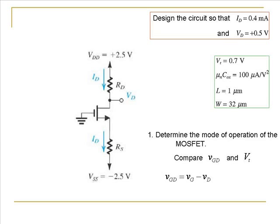VGD equals VG minus VD, which is VT. As we can see from the diagram, the gate voltage is zero because the gate is grounded, and the drain voltage is equal to VT. Therefore VGD turns out to be minus VT. Since our target is to design the circuit such that the drain voltage is plus 0.5 volts, minus VD equals minus 0.5, which is less than the threshold voltage. Therefore our circuit is operating in the saturation mode.